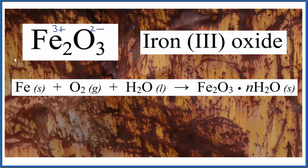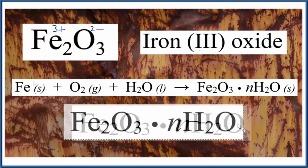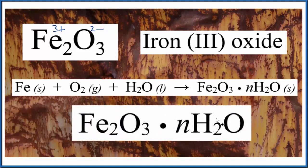It might be better to write the formula for rust like this. This dot means that these waters, this is a hydrated form of Fe2O3. The n here means that it'll be a different number depending on the conditions.